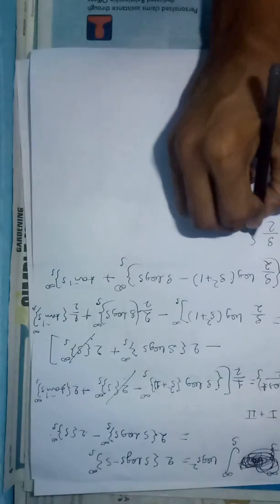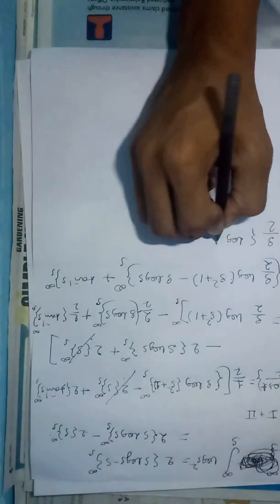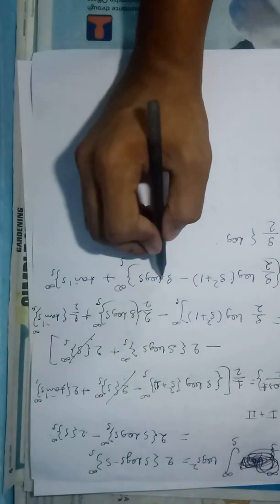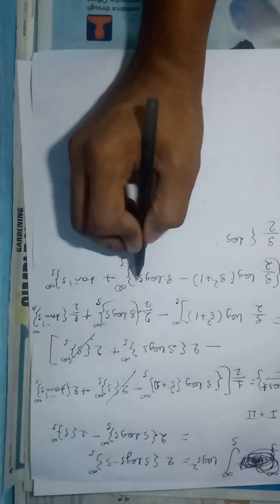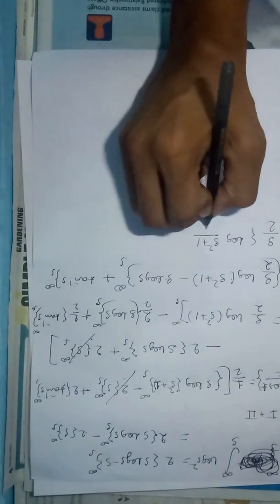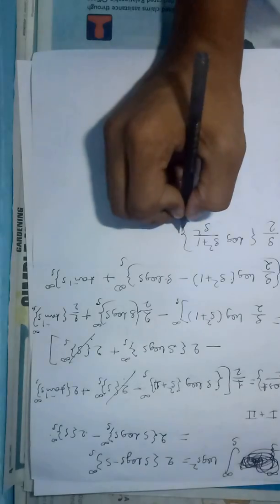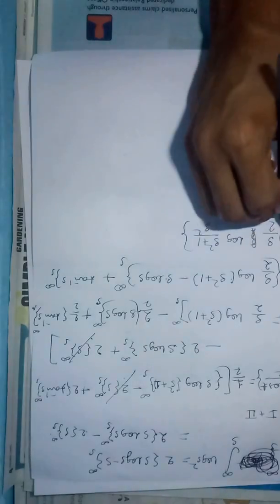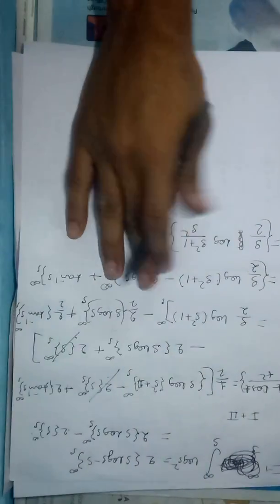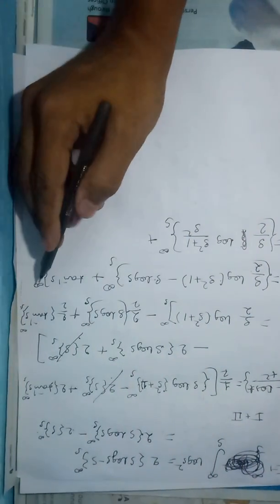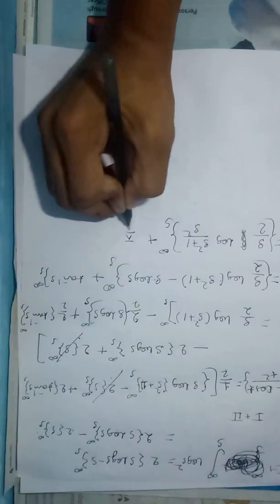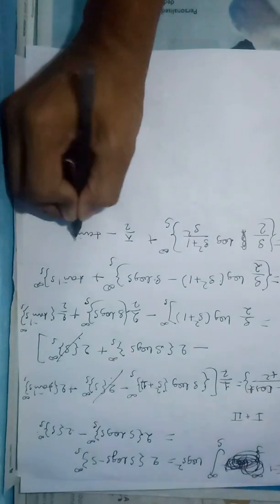Taking s common and applying log properties, (s² + 1)/s² inside the log becomes log(1 + 1/s²), so we get (s/2)·log(1 + 1/s²) from s to infinity. Evaluating the upper limit: putting infinity gives tan⁻¹(∞) = π/2, and the log term → 0. So the result is π/2 − tan⁻¹ s minus (s/2)·log(1 + 1/s²).